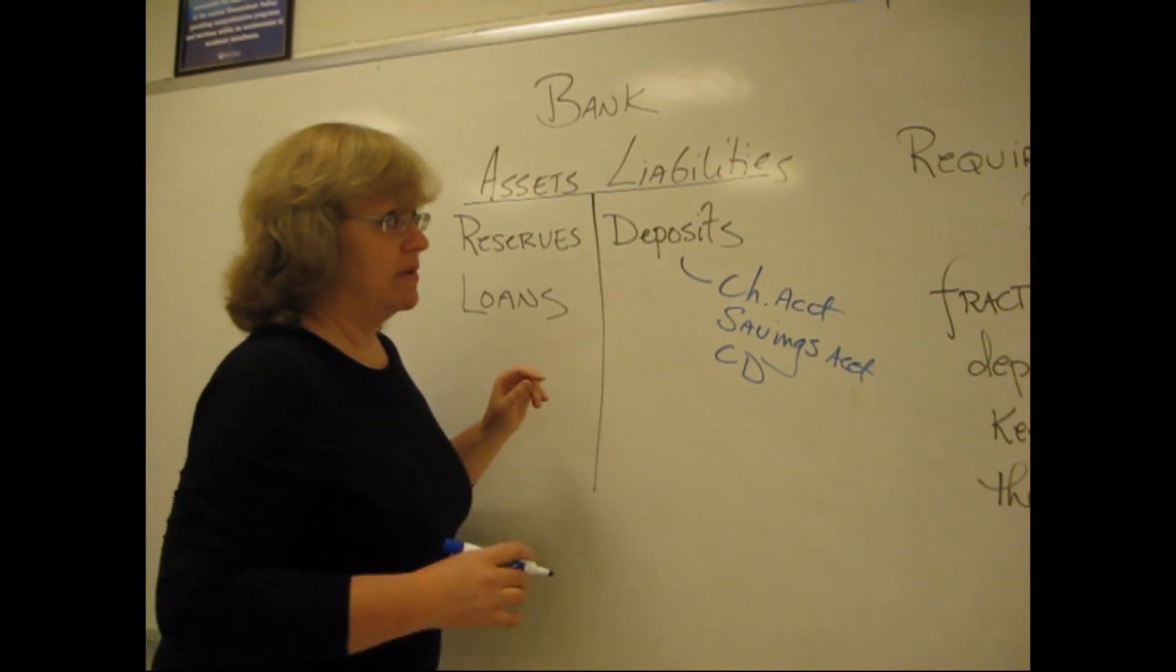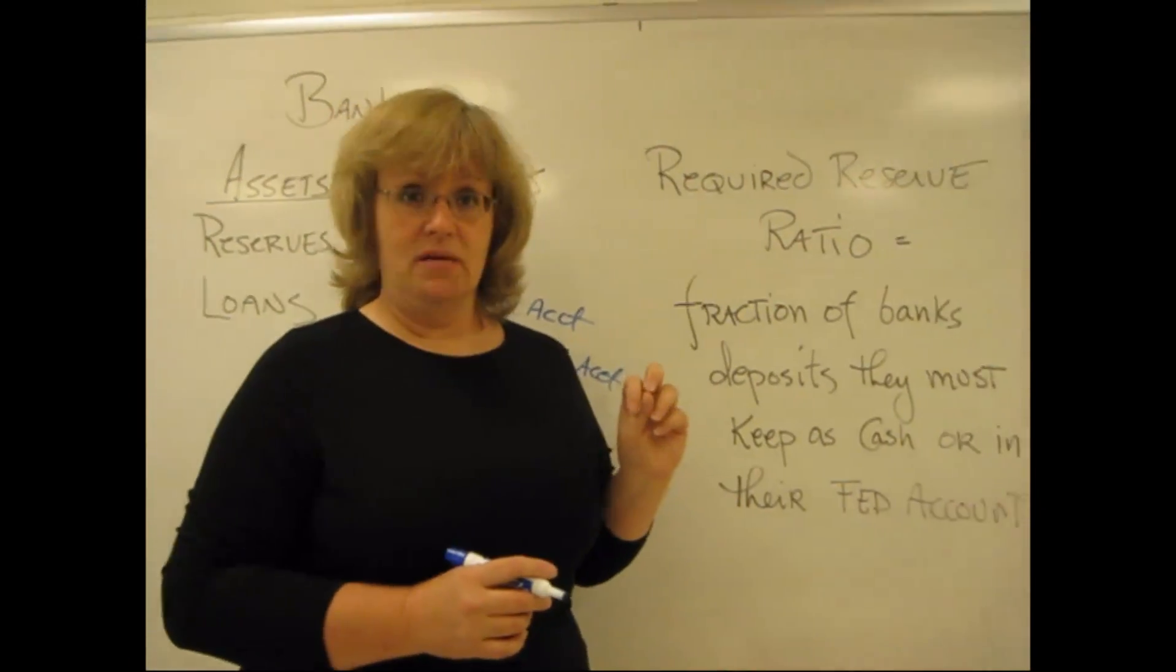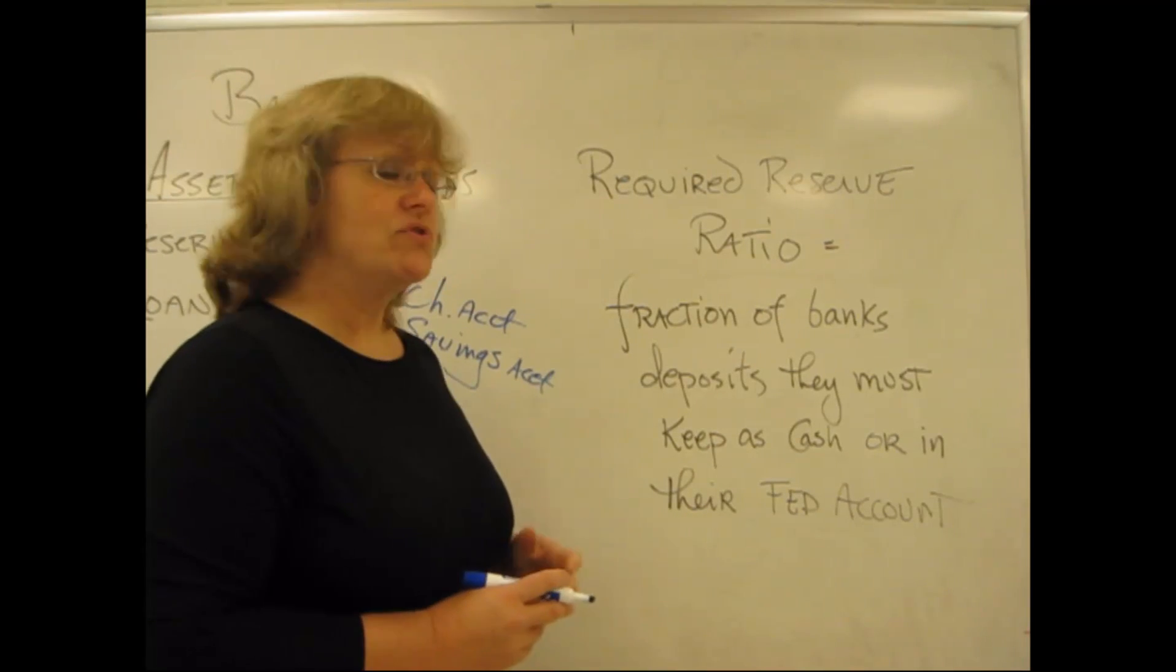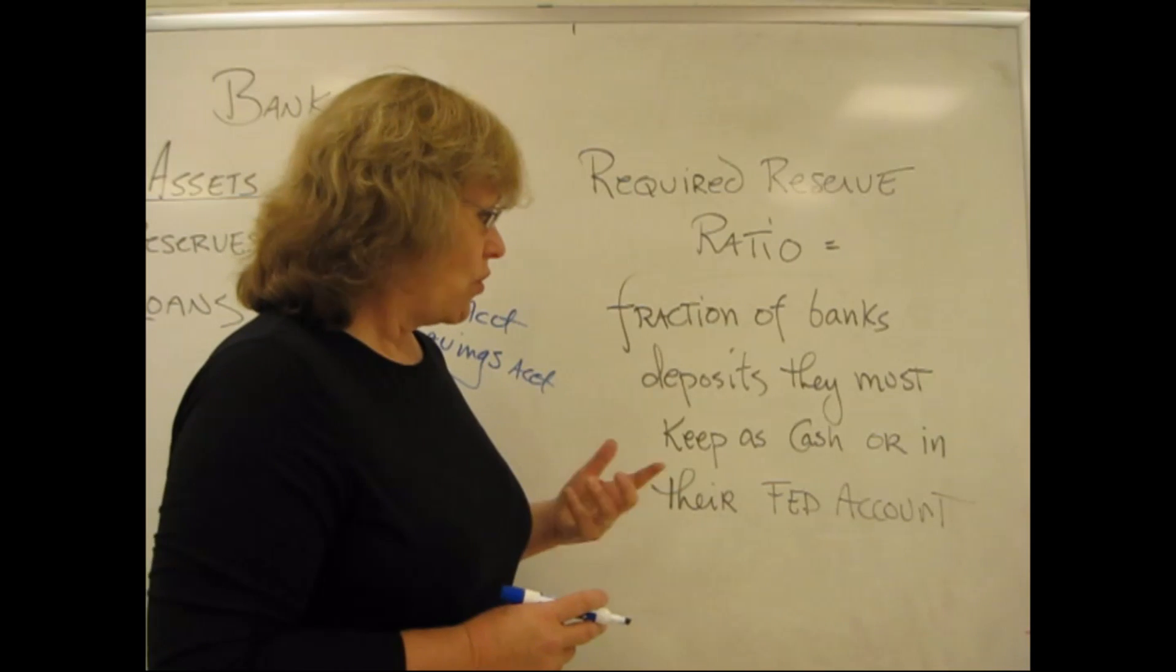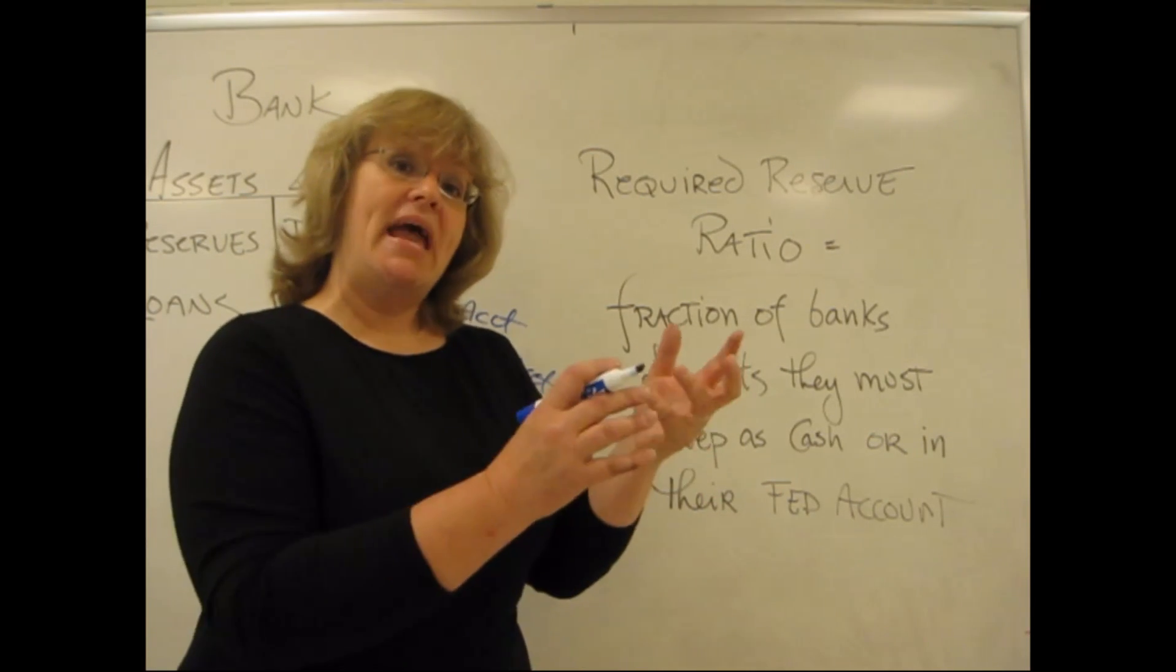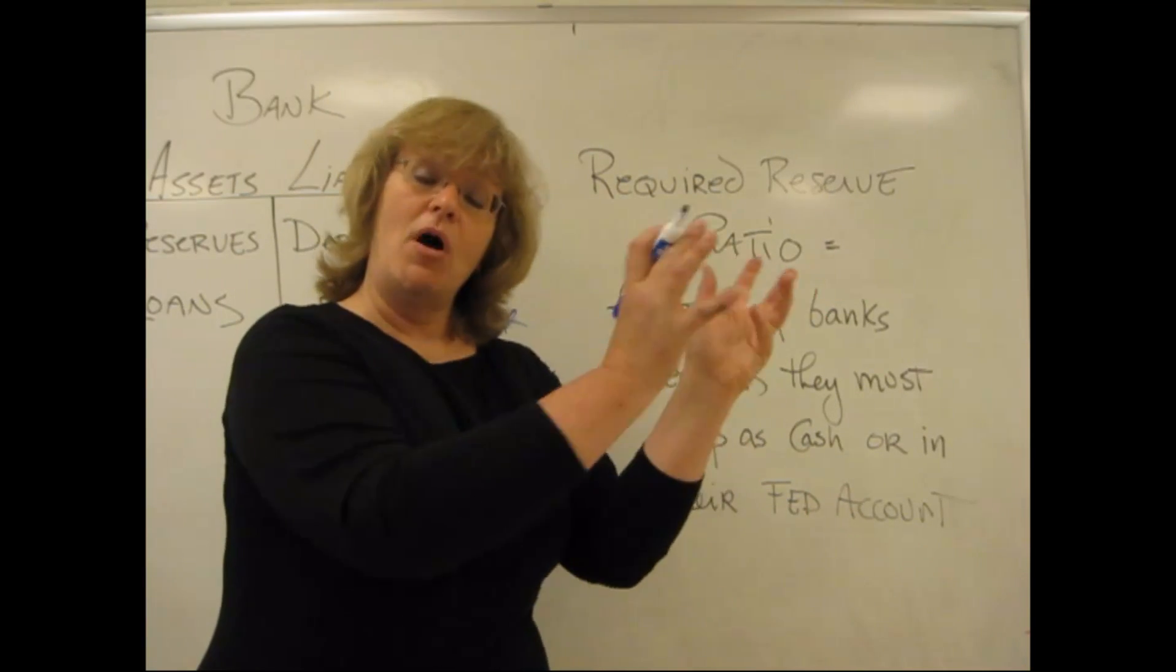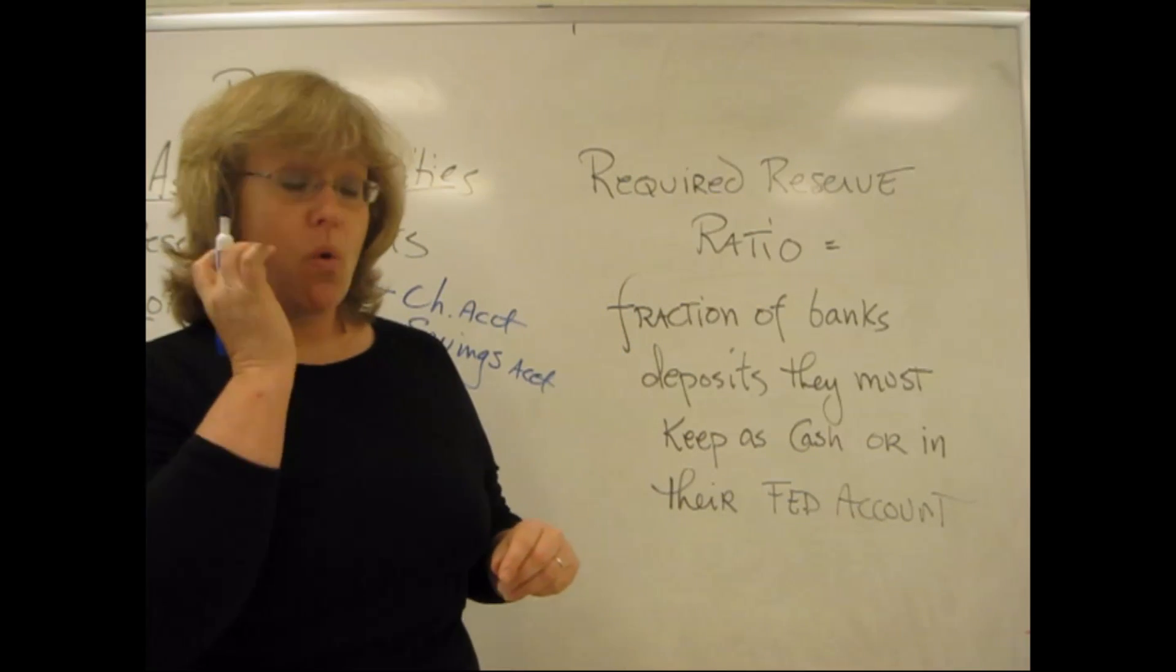We're going to come back to this in just a moment. Over here, I've got a definition for you that's also coming out of the same chapter, and that's the required reserve ratio. The required reserve ratio is the fraction of a bank's deposits that they must keep as cash, or in their Fed account, on hand at all times. So the banks can't just do anything they want with all of your money. They must keep a portion of that, a relatively small portion, aside as what's called their required reserves.